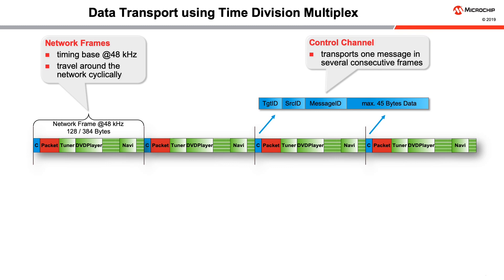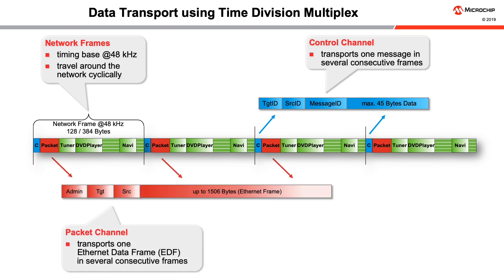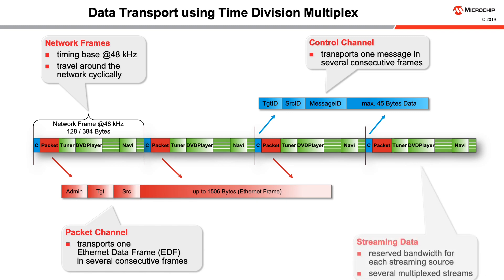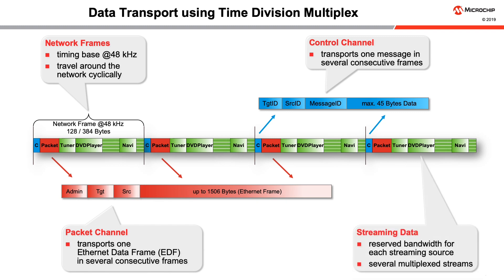The control channel transports a single control message split up into quadlets — chunks of four bytes — across several consecutive frames. Similarly, devices which use packet data transmission share the packet channel. An Ethernet data frame (EDF) has up to around 1500 bytes and might be spread across many network frames. However, the individual chunks are typically much bigger than on the control channel, resulting in much higher bandwidth. The bytes in the streaming data area of the network frame can be assigned individually or in blocks to a specific application, thus building up a logical channel. Streaming data is transported in several time division multiplex streams, providing reserved bandwidth for each audio and video source associated to a stream.